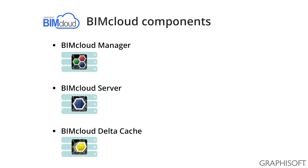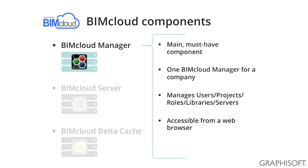BIMcloud consists of three main components: the BIMcloud Manager, the BIMcloud Server, and the BIMcloud Delta Cache. The BIMcloud Manager is the main and must-have component of the entire system. This is the gateway from which all connections start. A company needs only one BIMcloud Manager in the office. This is where the managers store the users, project's logical structure, the roles and libraries. This component also provides the browser-based management interface.